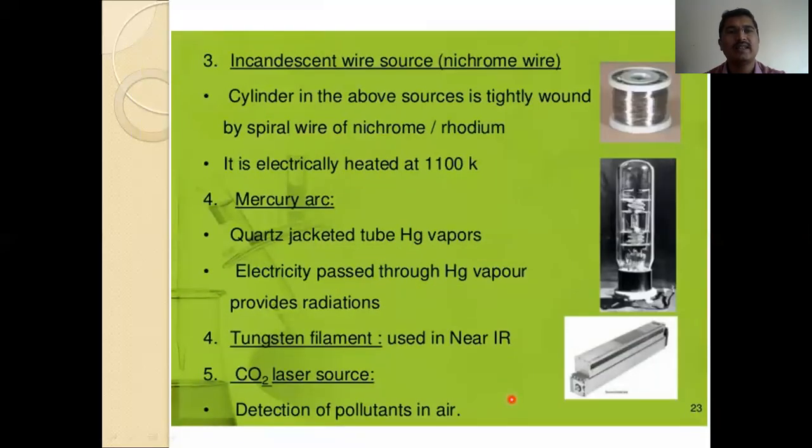This is also the incandescent wire source, that is the nickel wire, you can see here, it is also a source of light. Mercury arc lamp, jacket tube, that is energy, mercury vapors, electricity passes through the mercury vapors, provides the radiation. Again, tungsten filament, using near-IR carbon dioxide laser source, detection of pollutants in the air.